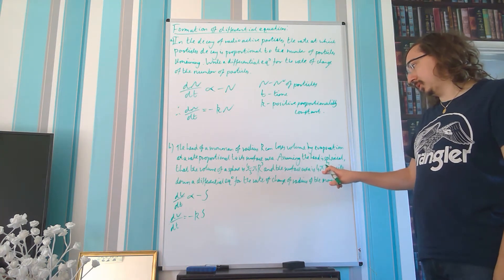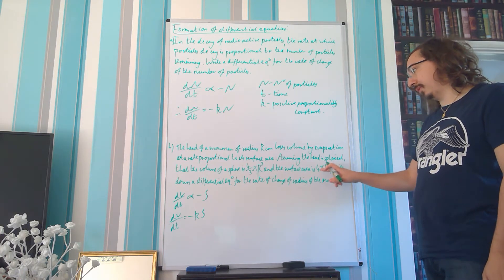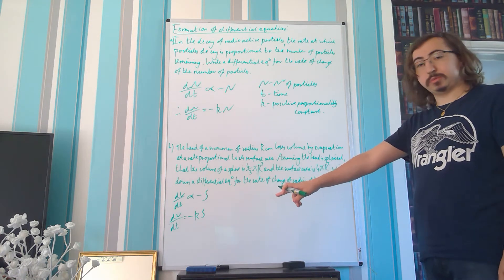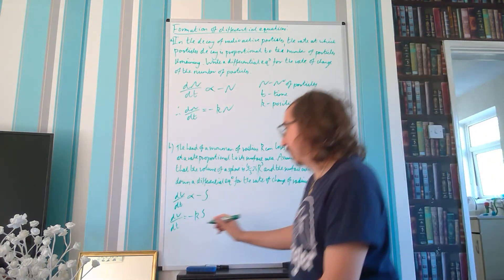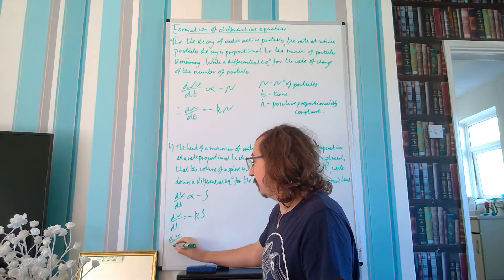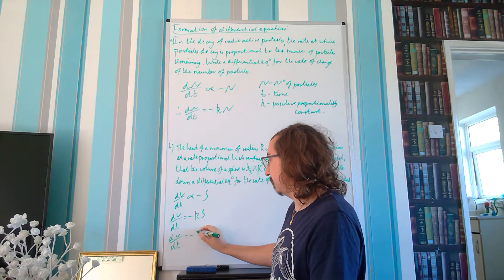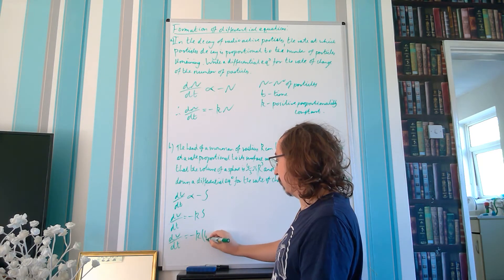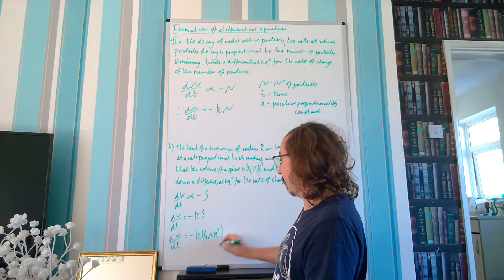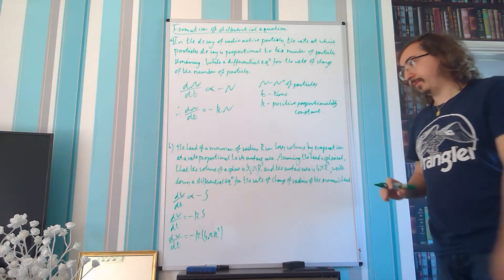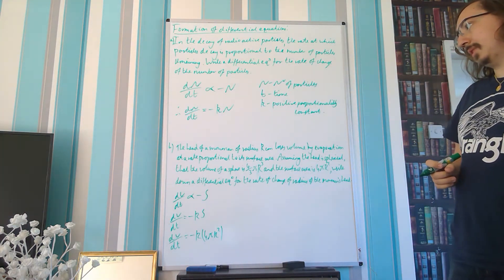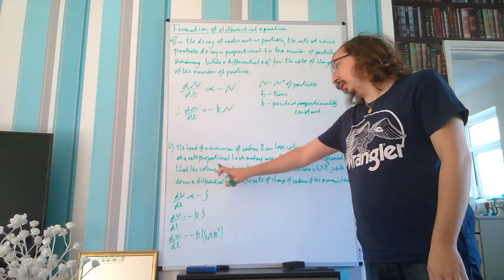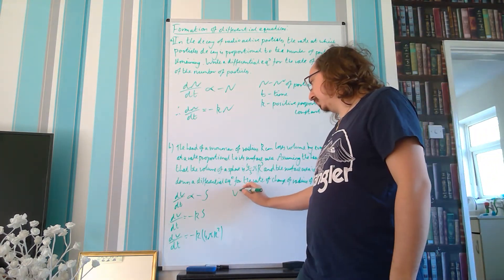We actually have an expression for the surface area — we're told the surface area is 4πr². So we can substitute that in and say that dV/dt equals minus k times 4πr². We're also given that the volume of the sphere is (4/3)πr³, which we'll come back to shortly.